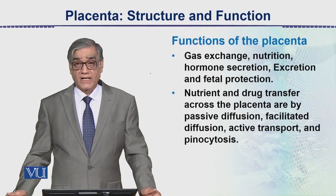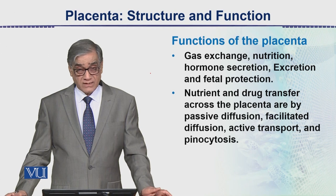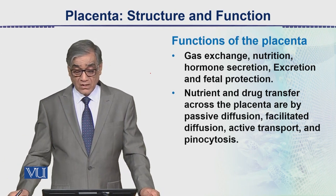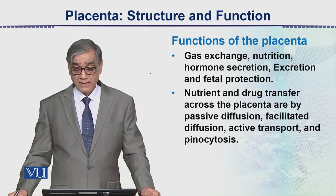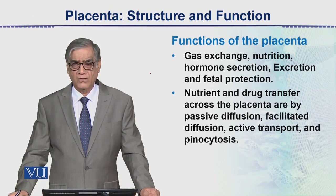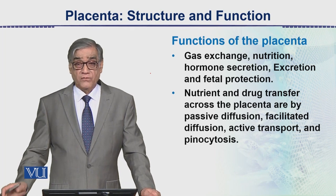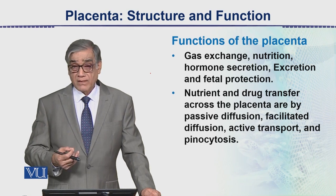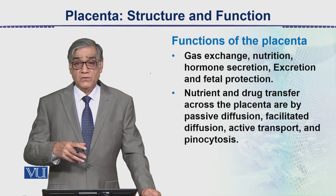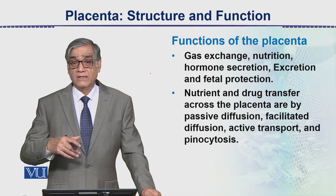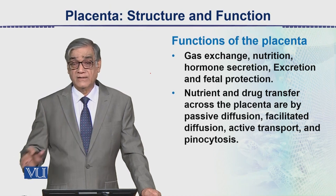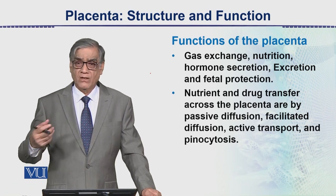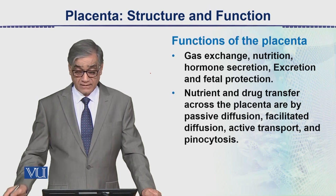Now the functions of placenta: first is gas exchange, then nutrition supply from mother to fetus, then hormones are secreted from the placenta - such as prolactin and oxytocin. Since metabolism is happening inside the fetus, nitrogenous waste is also being produced, and these nitrogenous wastes are removed through the placenta from the fetus into the mother. They come into the mother's blood and then the mother's kidneys excrete them completely out.